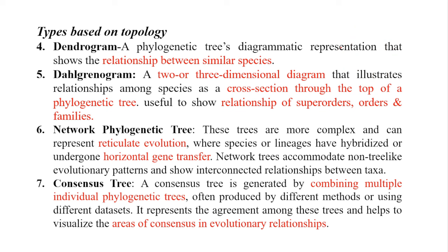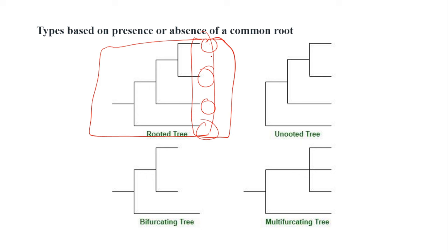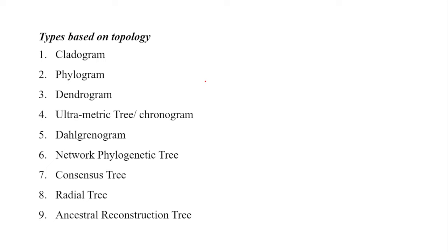In a dendrogram, the phylogenetic tree is represented in a three-dimensional structure, shown like a bubble. It gives a three-dimensional picture of the similarities and dissimilarities between clades. You can observe here a cross section of the top portion of the clade of a phylogenetic tree.